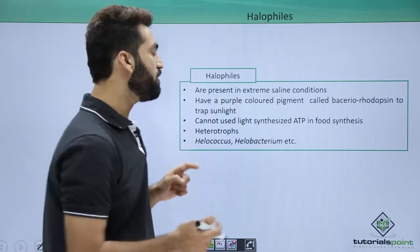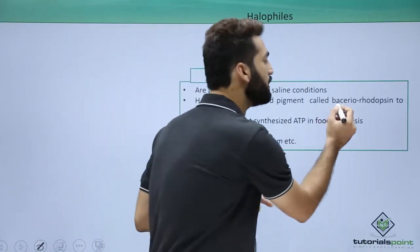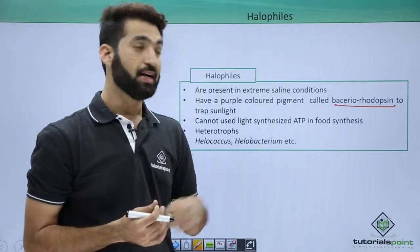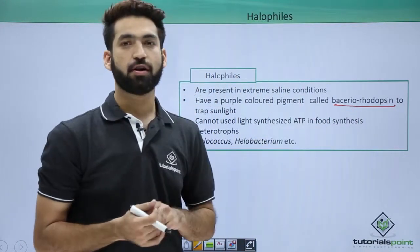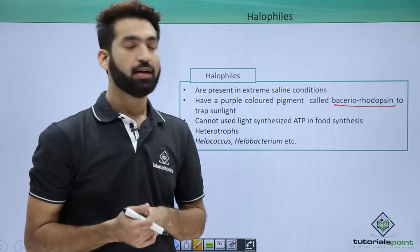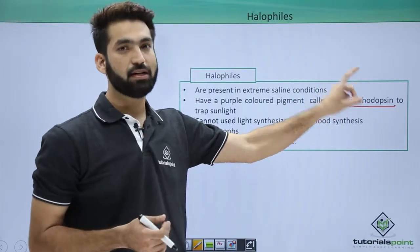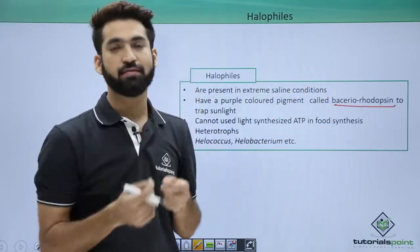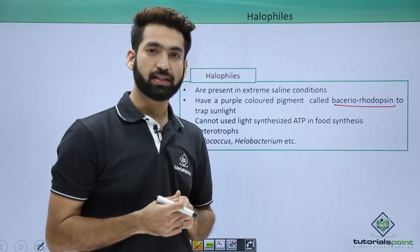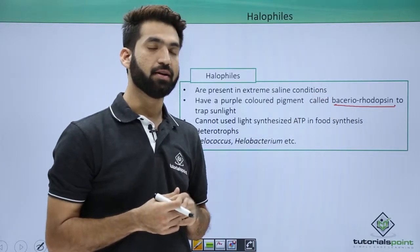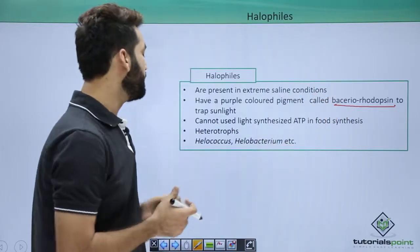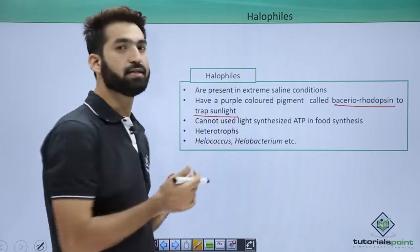Now they have a very important pigment called bacteriorhodopsin. It is similar to the rhodopsin found in your eyes. With the help of bacteriorhodopsin, the bacteria can trap sunlight.